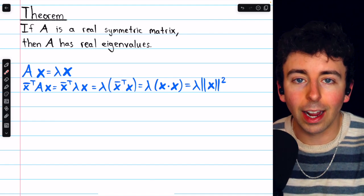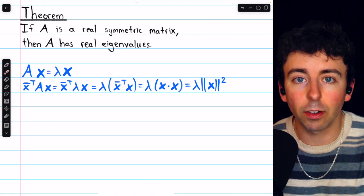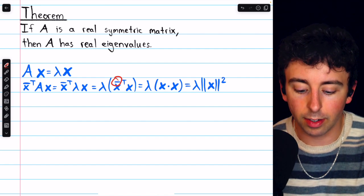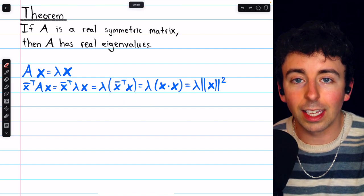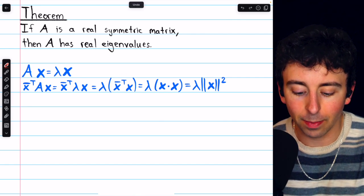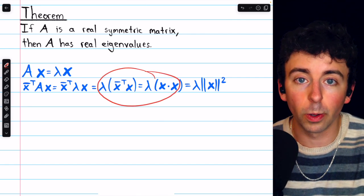In the case where x is a complex vector, this conjugate is consistent with the complex dot product, so the equation holds. In the case where x is a real vector, the conjugate doesn't do anything, and so again, the equation still holds.